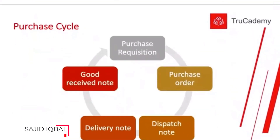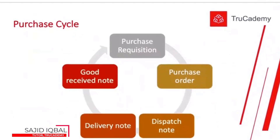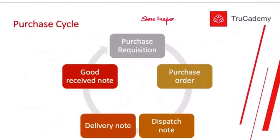Next: the purchase cycle. As a brief revision, if any department of our organization wants to buy some products or raw material, the storekeeper checks the inventory records and decides we need to buy some raw material. The storekeeper will prepare a purchase requisition and send it to the procurement department or purchasing department.